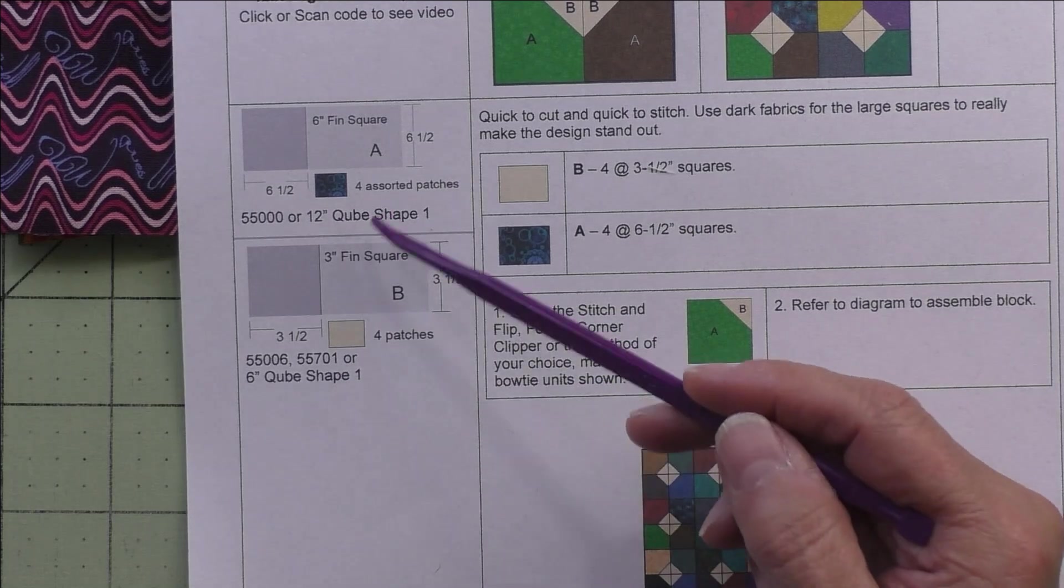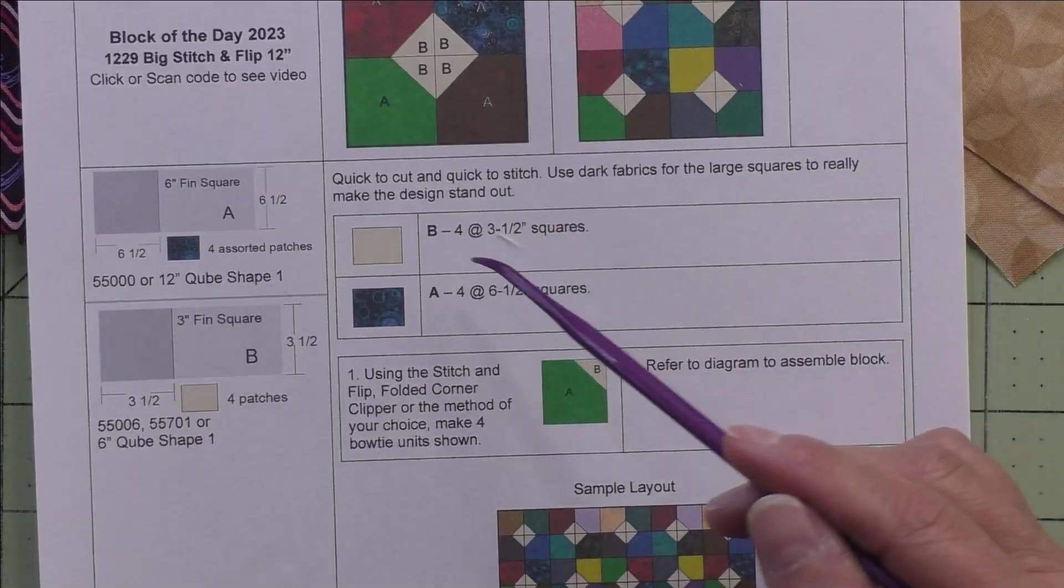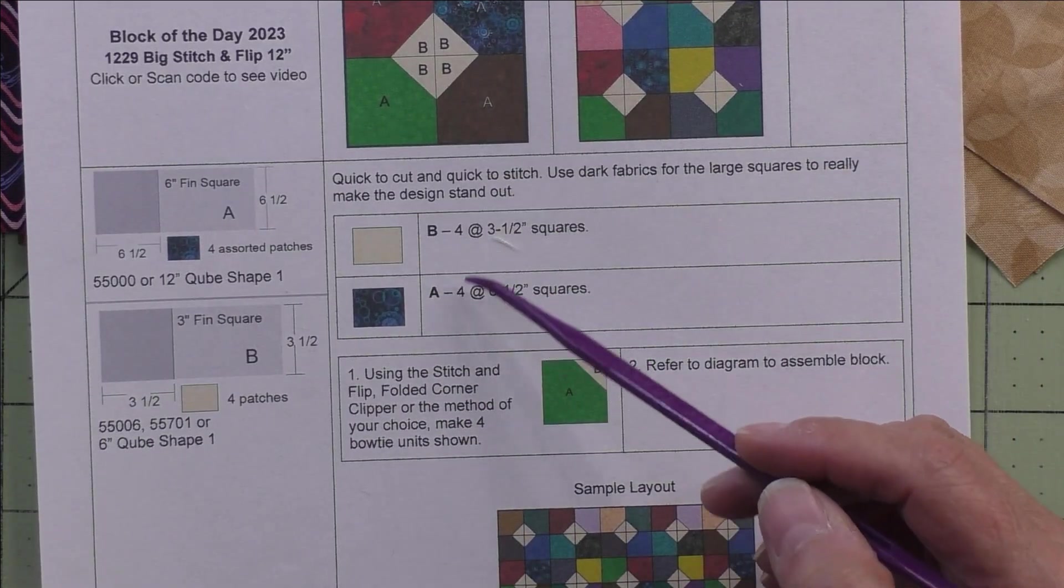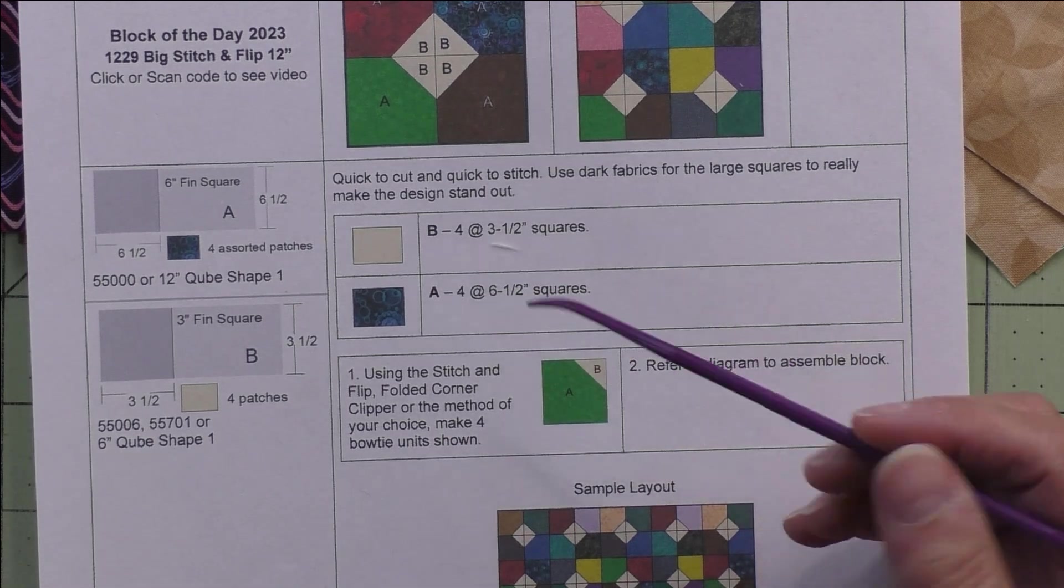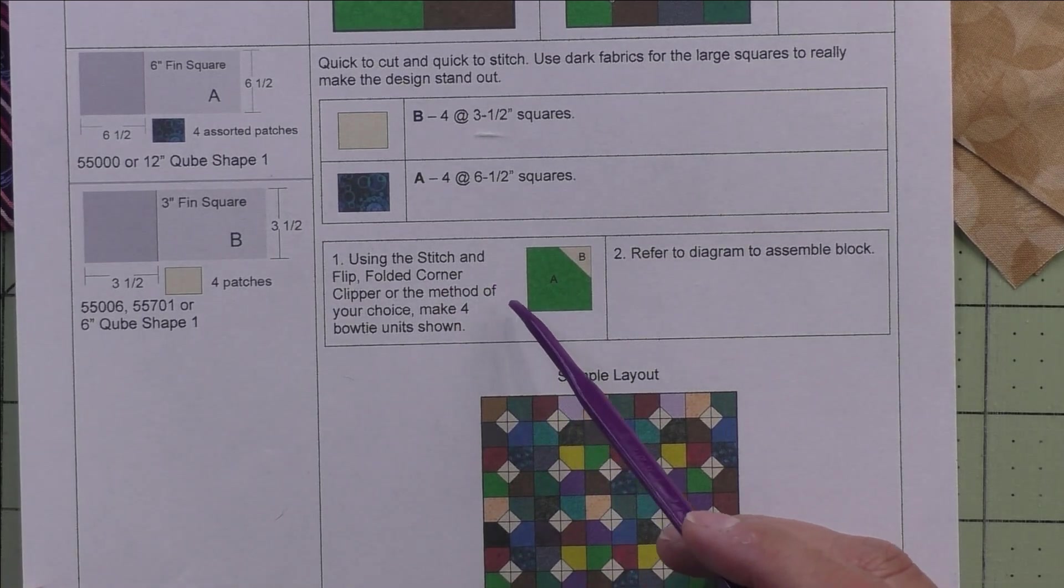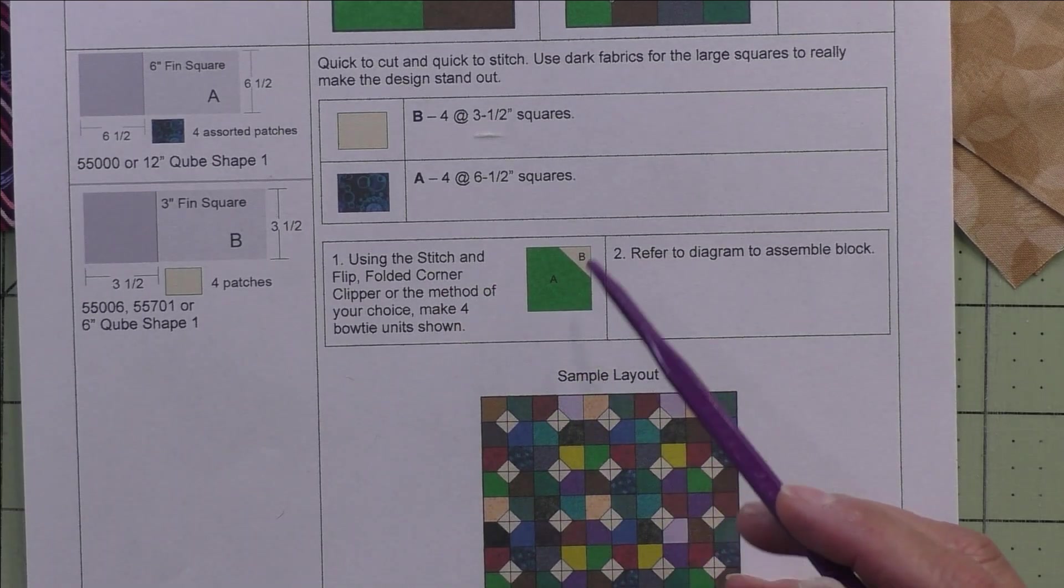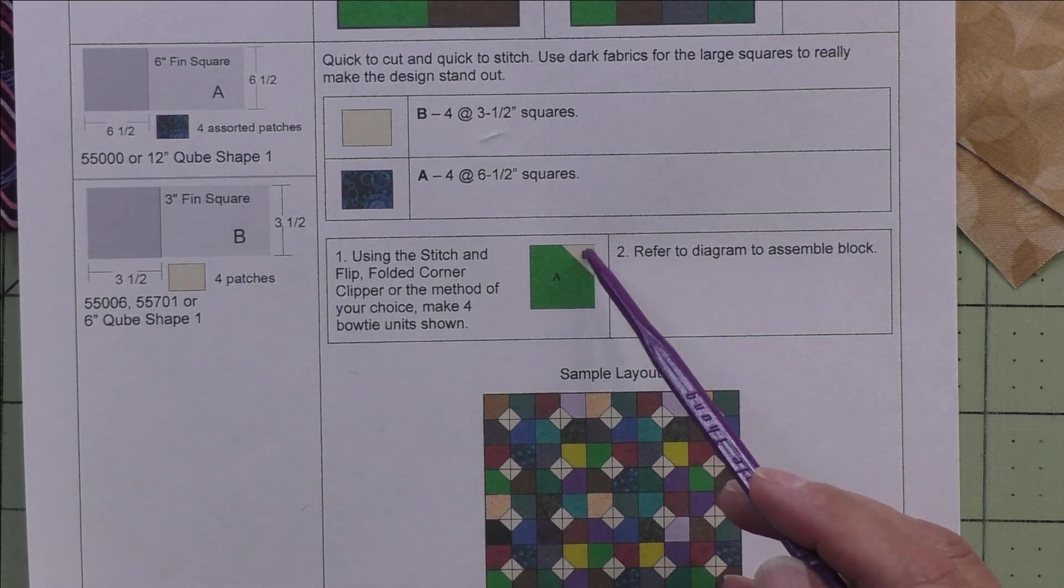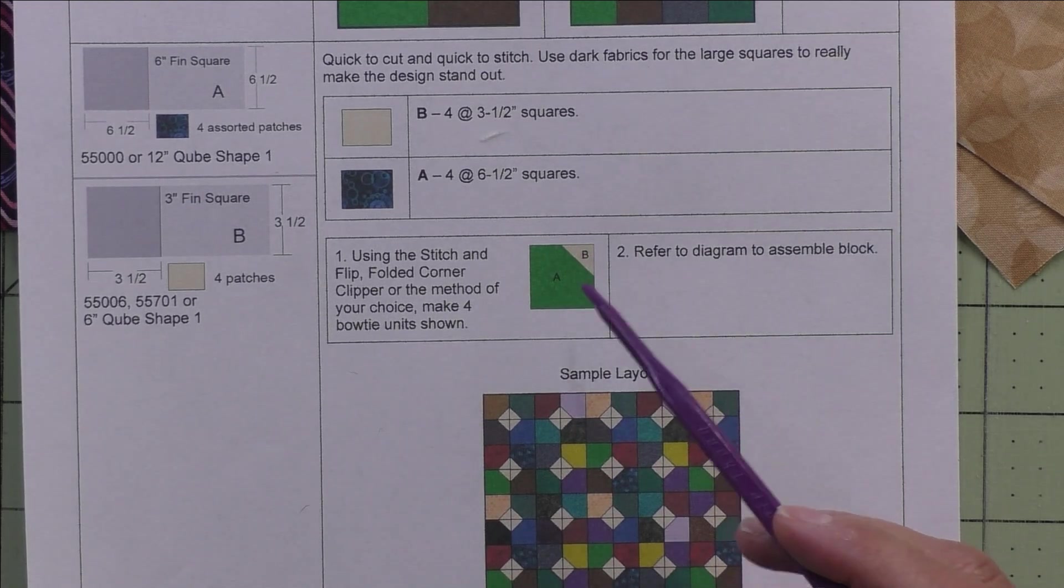Here are the AccuQuilt dies that will cut these two patches, and here are all the cutting instructions for the separate fabrics, the lights and the darks. What we're going to do is use stitch and flip or a folded corner clipper or whatever method you use to stitch this triangle in the corner of this square, but I'm going to show you stitch and flip.